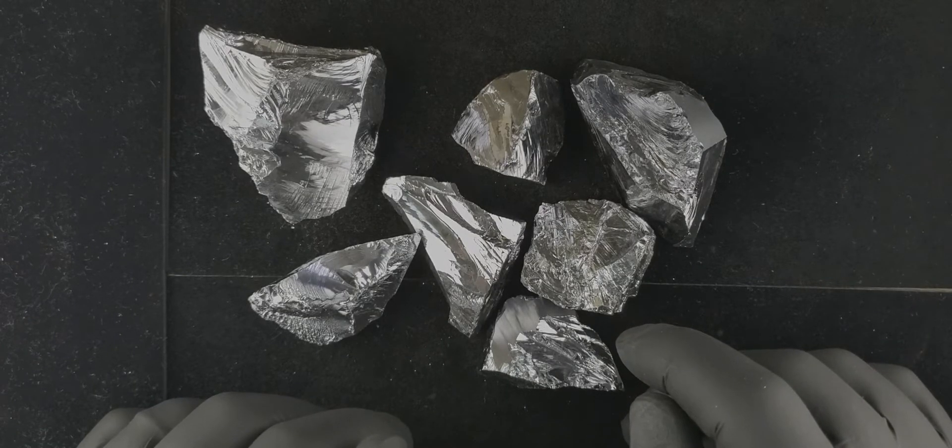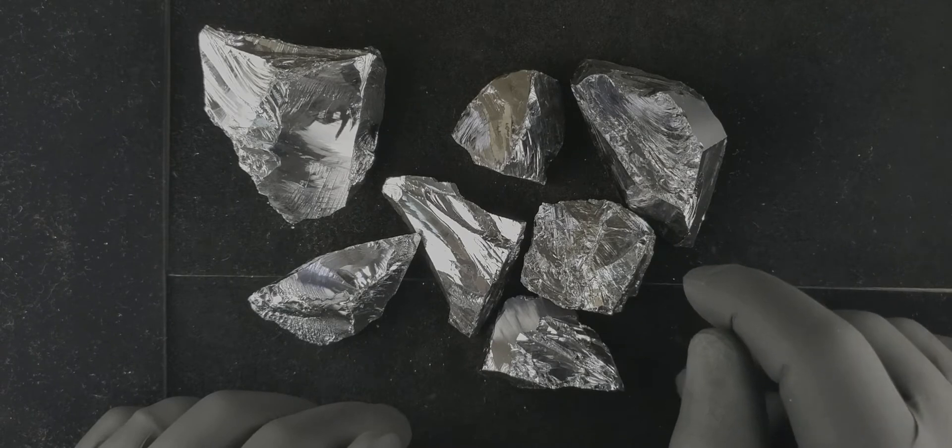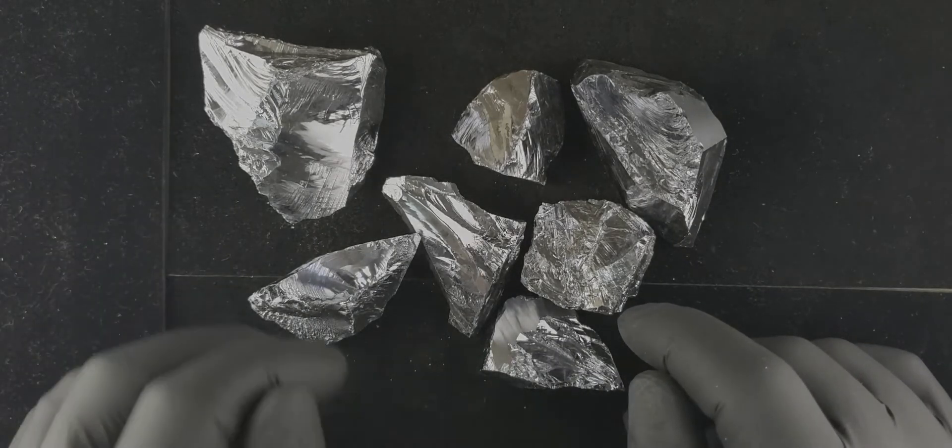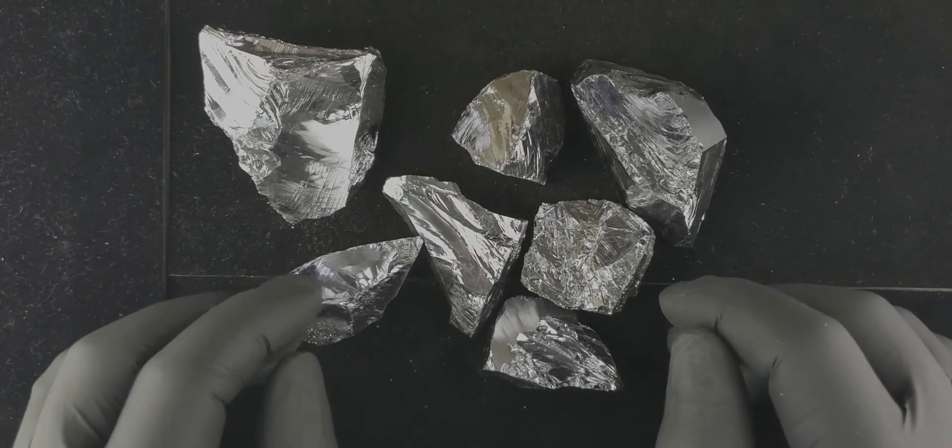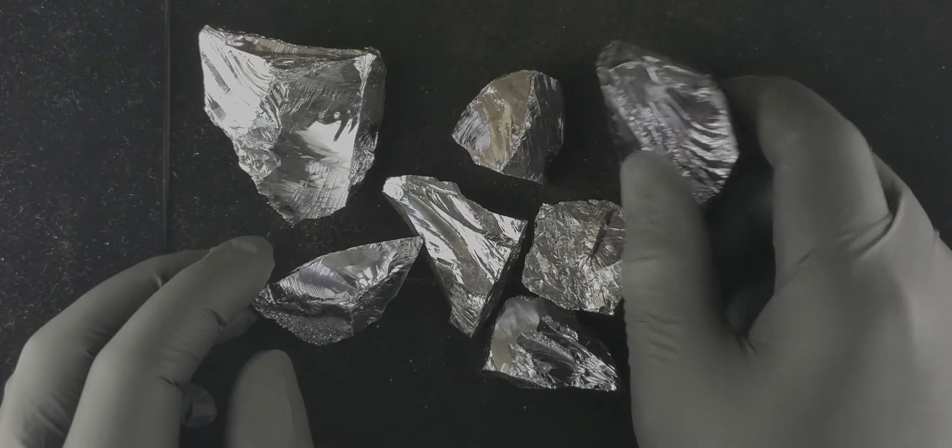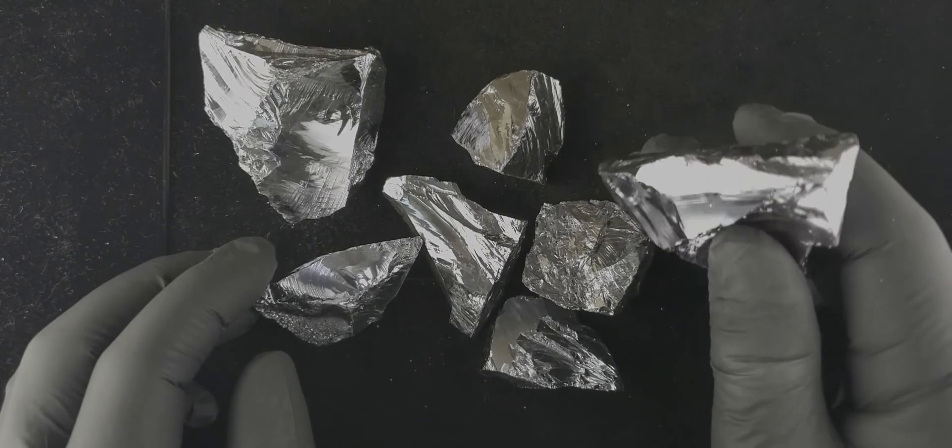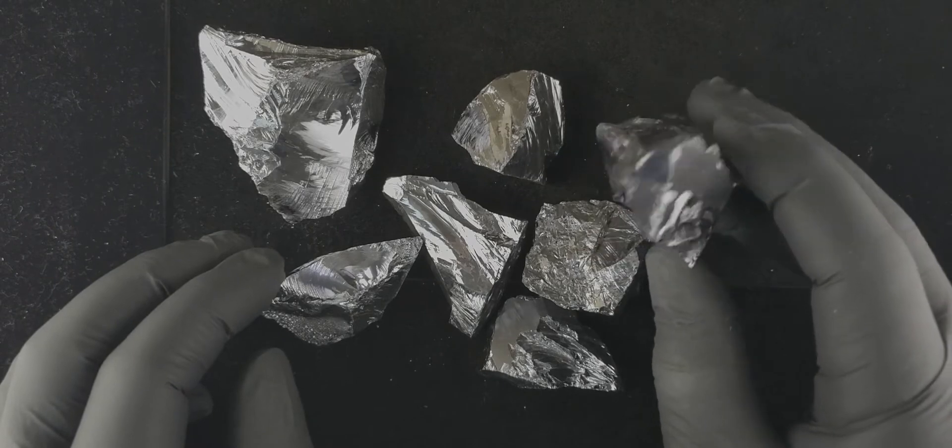Every chip that you see on a computer is nothing more than a piece of this sliced very thin with some plastic on either side and maybe a few wires coming out of it. But at the heart of it is a chip made out of this element, and these are made at very high purity.